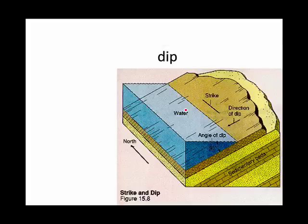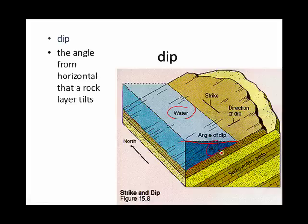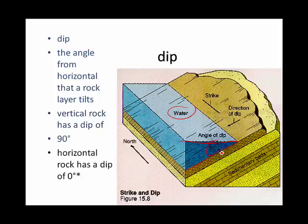Here we have a horizontal surface represented by the top of a body of water, and you can see that the angle from that horizontal surface and the tilting rock layers is 30 degrees. So once again, the dip is the angle from the horizontal that a rock layer tilts. If the rock were vertical, it would have a dip of 90 degrees, whereas horizontal rock wouldn't dip at all. Its dip would be zero.